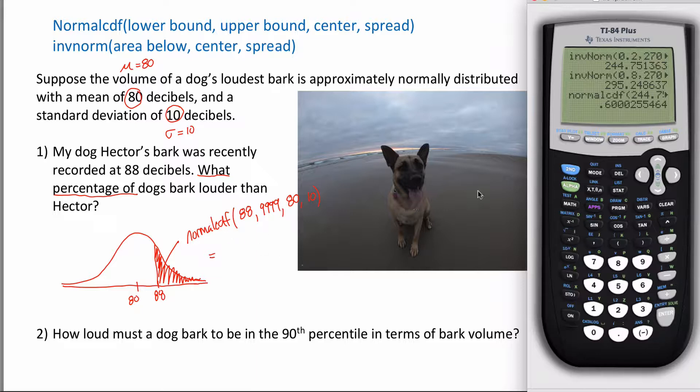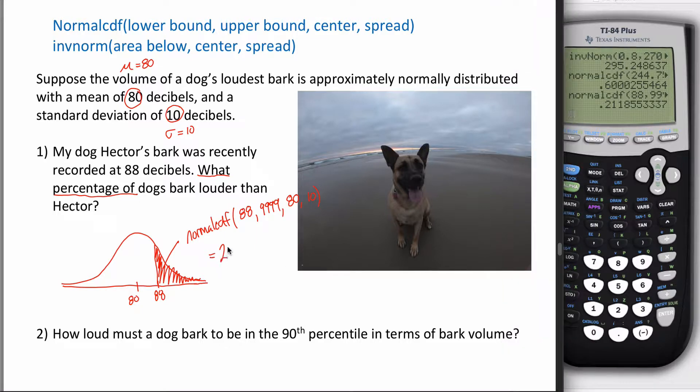Type that into my calculator. It's in the distribution menu - hit second then variables to get there. Go down to normalCDF. My lower bound is 88, upper bound some arbitrarily large number, center is 80, spread is 10. If you have this version of the software, it'll ask you those four questions. If not, you type in those four arguments with commas between them. Hit enter. It spits out 21.19% if I rounded to two decimal places.